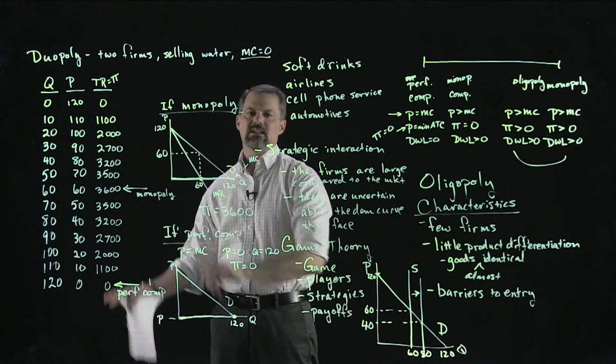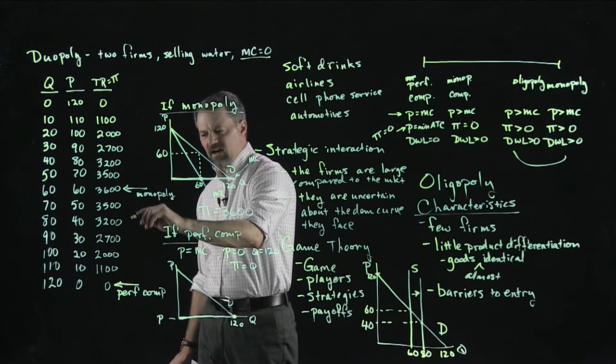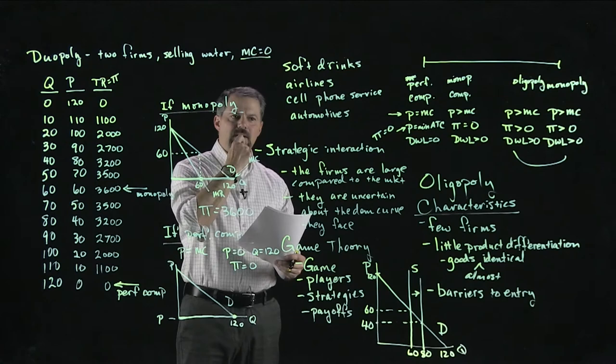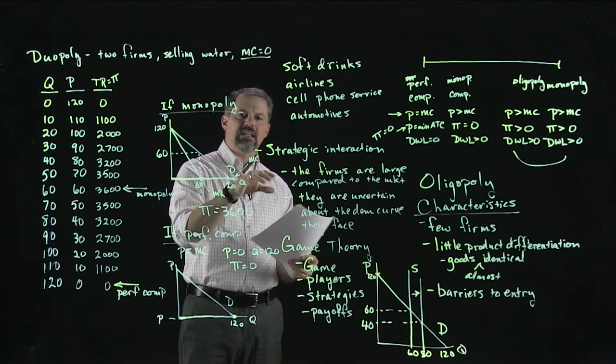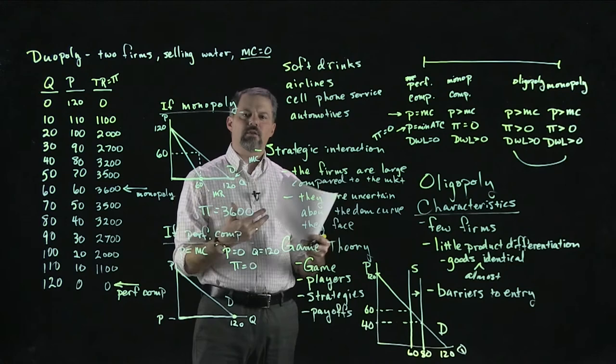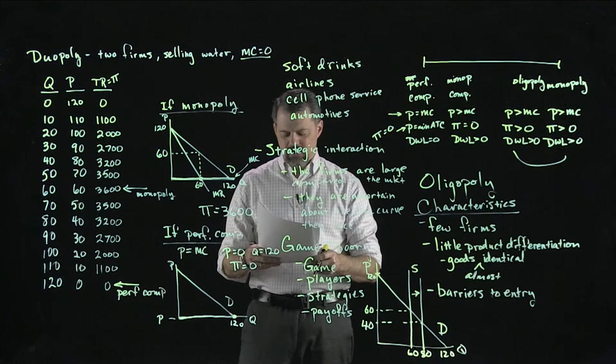We know that if we had a monopoly the outcome would be Q=60, P=60, and if we had perfect competition it would be P=0, Q=120. Oligopoly lies between those two, so we'd expect our oligopoly outcome to be somewhere in that range, probably closer to the monopoly outcome. One thing that could happen is that both firms secretly agree to each bring 30 gallons and achieve the monopoly outcome — they could collude with each other. If two firms are colluding, we call that a cartel.